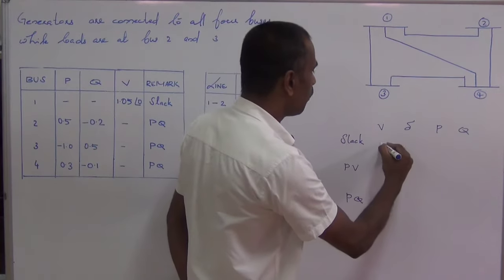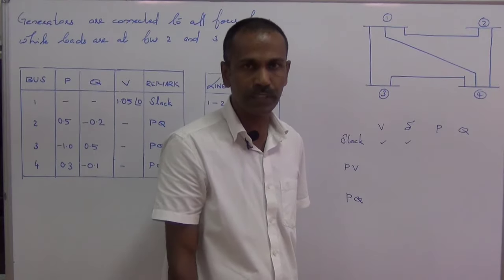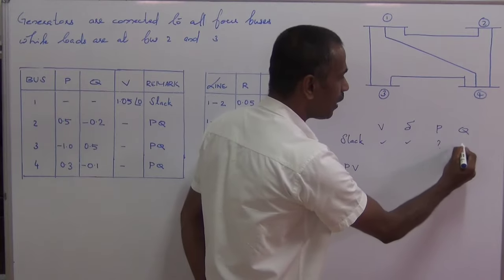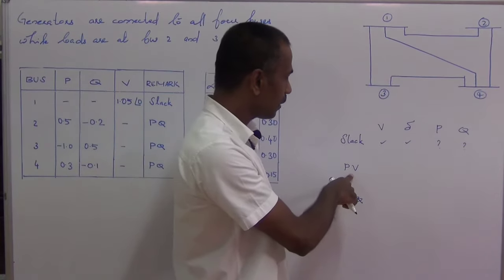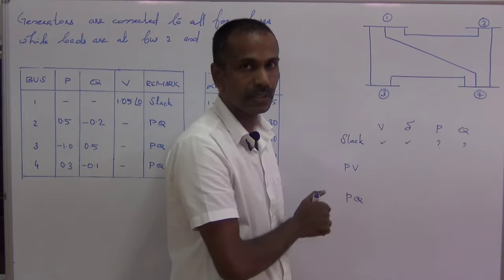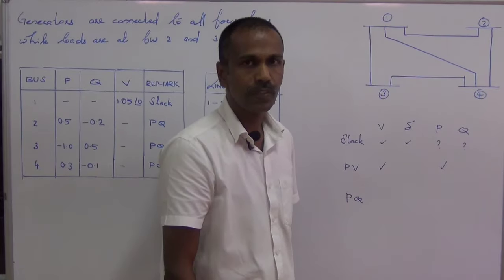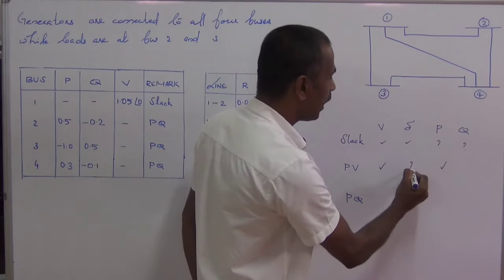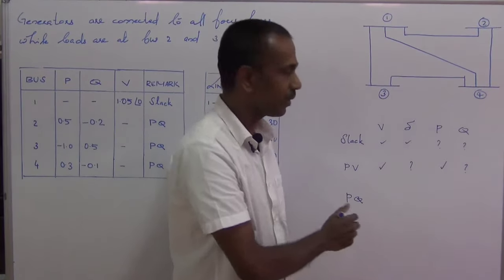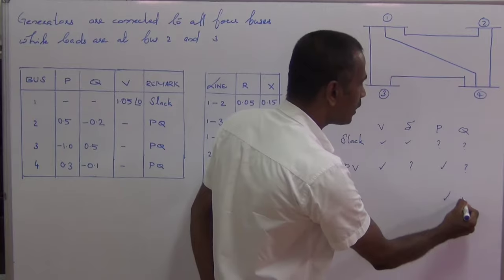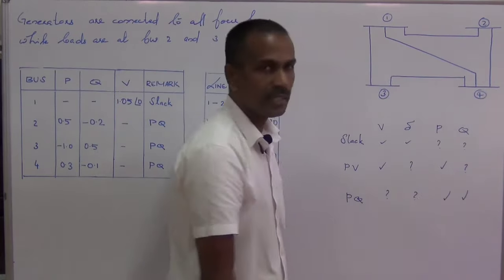At the slack bus, both the magnitude and angle of the bus voltage will be specified, so we have to find out P and Q. At the PV bus or the generator bus, P and V are specified, so we have to find out delta and Q. At the PQ bus or the load bus, P and Q are specified, so we have to find out V and delta.